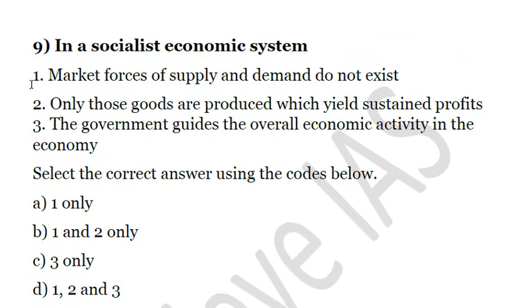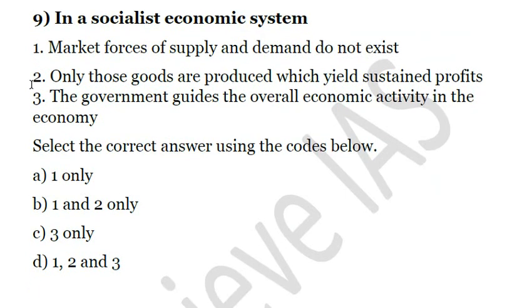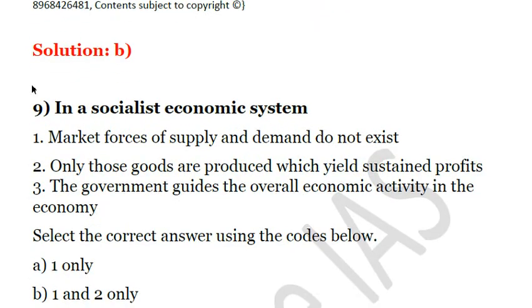Question 7 — In a socialist economy: First, market forces of supply and demand do not exist; second, only those goods are produced which yield sustained profits; third, the government guides the overall economic activity. In a socialist economy, everything is controlled by the government, so the third statement is correct. Answer: C, third only.